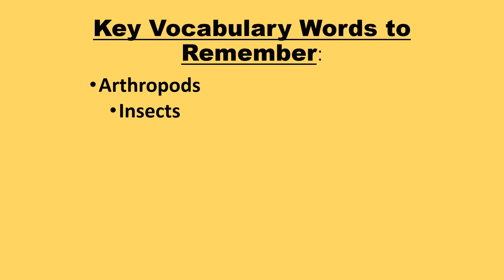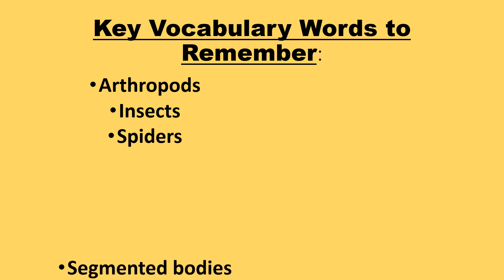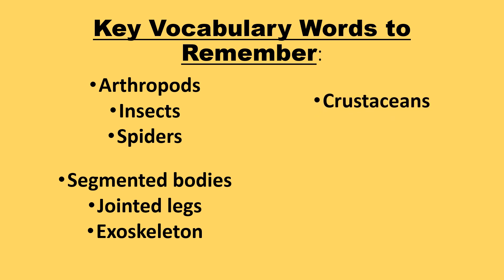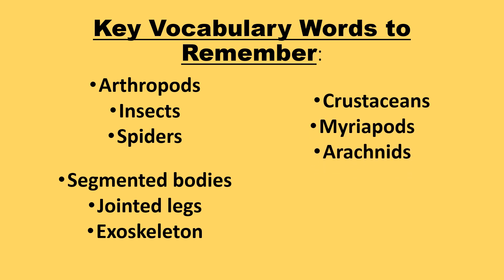Key vocabulary words to remember: arthropods, insects, spiders, segmented bodies, jointed legs, exoskeleton, crustaceans, myriapods, arachnids.